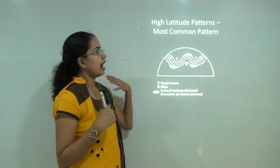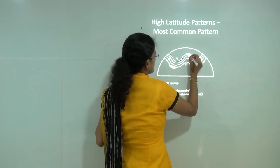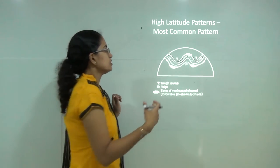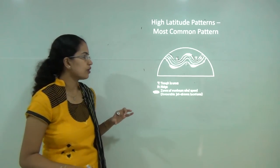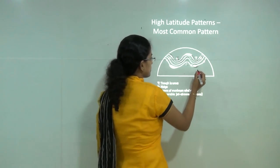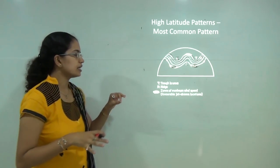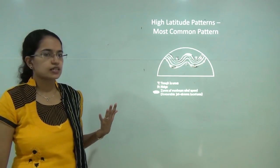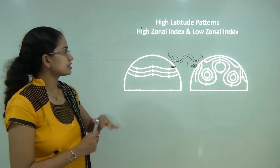Palmen also tried to explain what happens in high-latitude patterns. He explained the concept of jet streams and Rossby waves again, saying this is the circulation pattern that exists in the upper troposphere. You have the formation of ridges and troughs — trough as a zone of low pressure and ridge as a zone of high pressure. The regions of maximum wind speed and most favorable conditions for jet streams occur in this area.